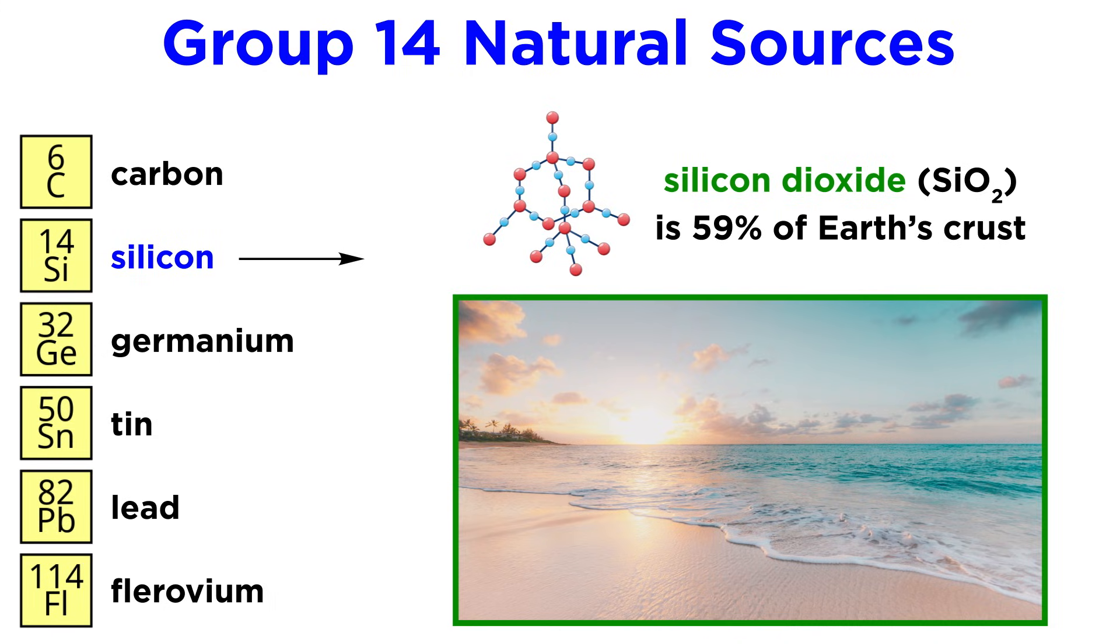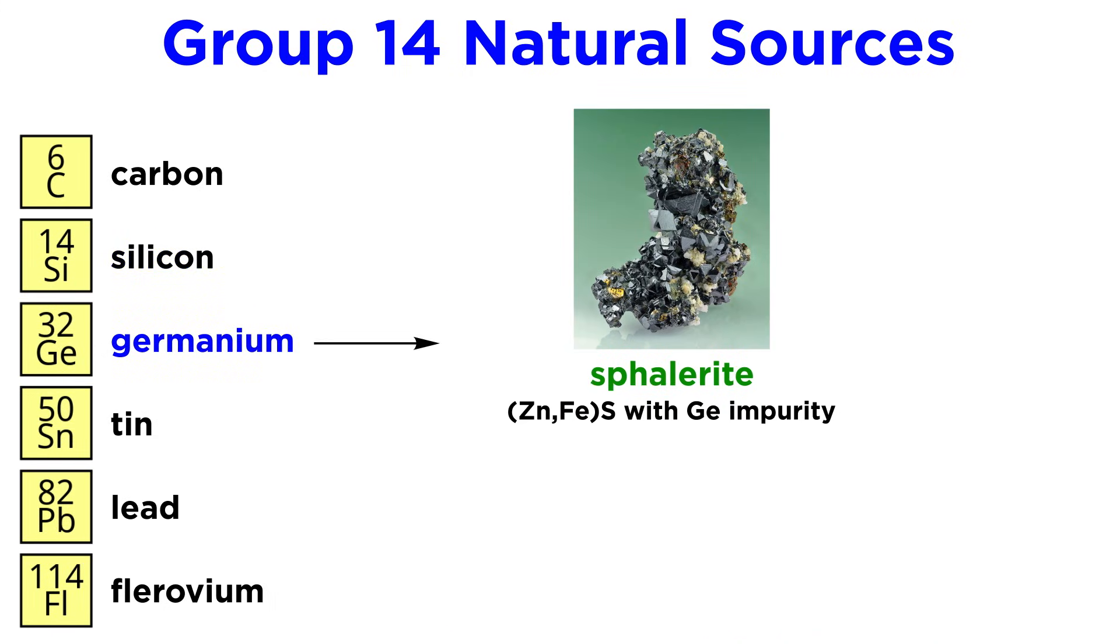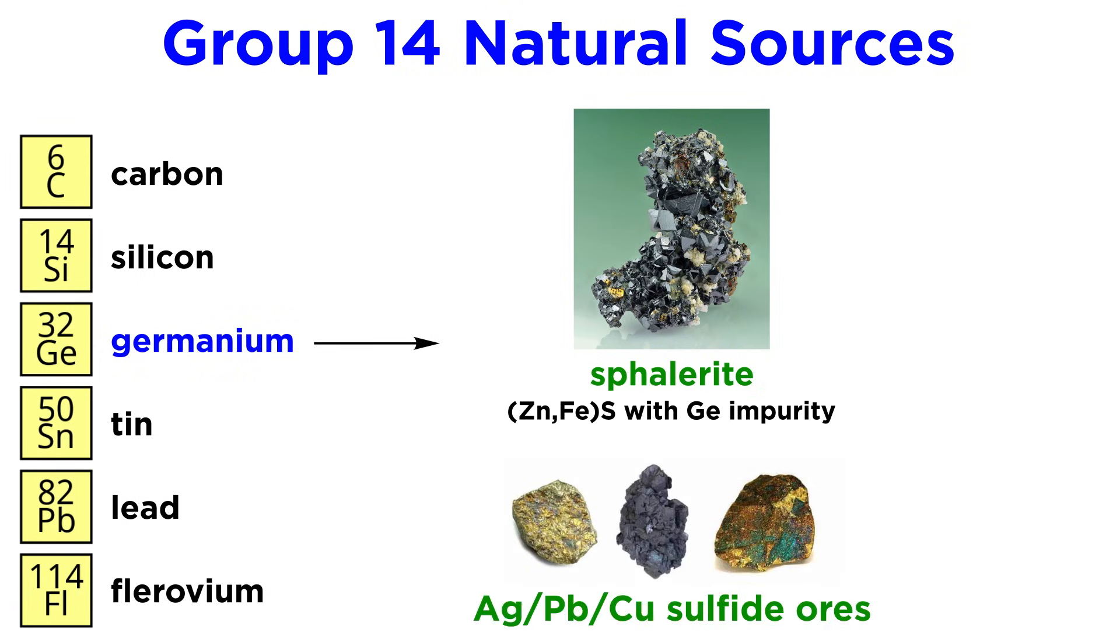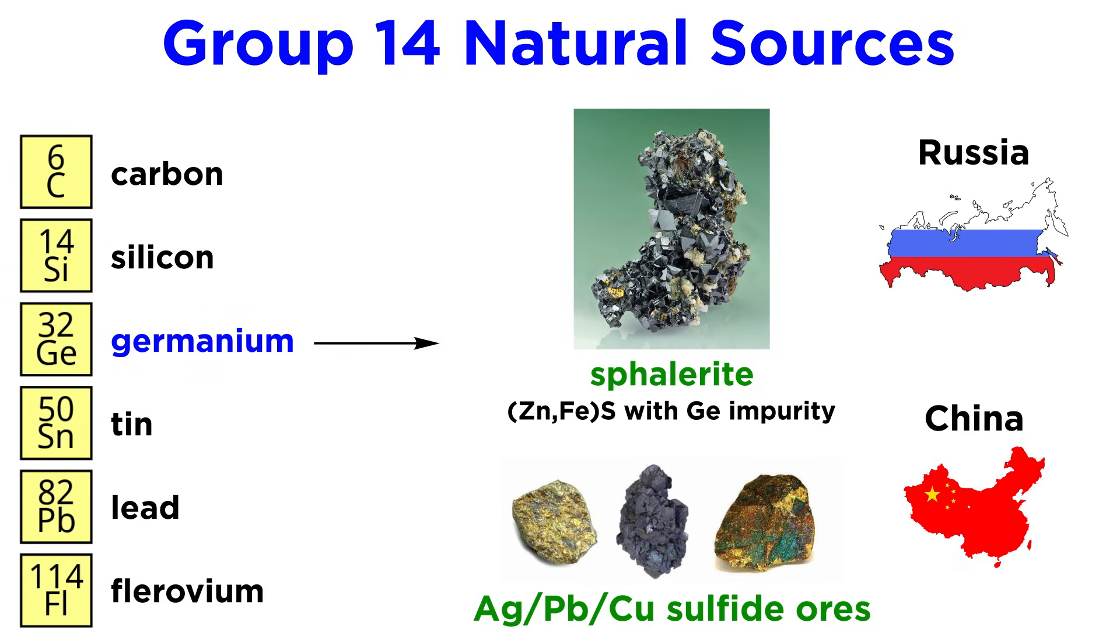And is easily found in sand at any beach. Germanium is found in ores like sphalerite, which has germanium sulfide impurity, as well as silver, lead, and copper sulfide ores. Russia and China are primary producers.